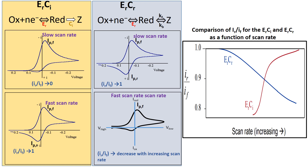So far, for both the ERCI and ERCR cases, we have only considered the cathodic and anodic peak current magnitudes at different scan rates. We have not yet talked about the peak potential position. In our next session, we will discuss that. Thank you.